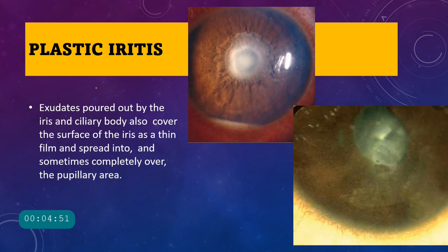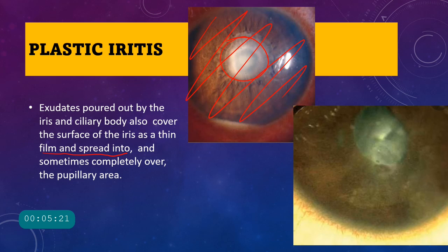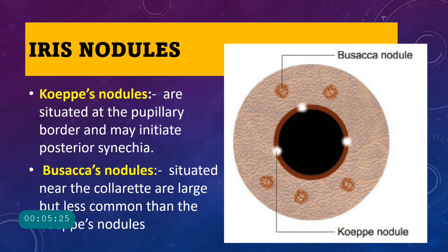Plastic iritis occurs when exudates pour out from the iris and ciliary body and cover the iris as a thin film, sometimes spreading onto the pupillary area causing occlusio pupillae. These exudates coat the surface of the iris making it even more difficult to react, and this condition is called plastic iritis.